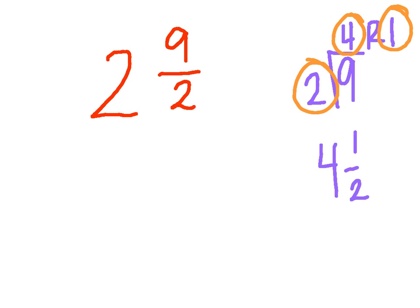So now I need to take 4 and 1 half, which is going to represent 9 halves, and I need to combine it with the 2 that's left over. So I know that 2 plus 4 is 6, and since there's no fractional piece to add, I know it's 6 and 1 half.